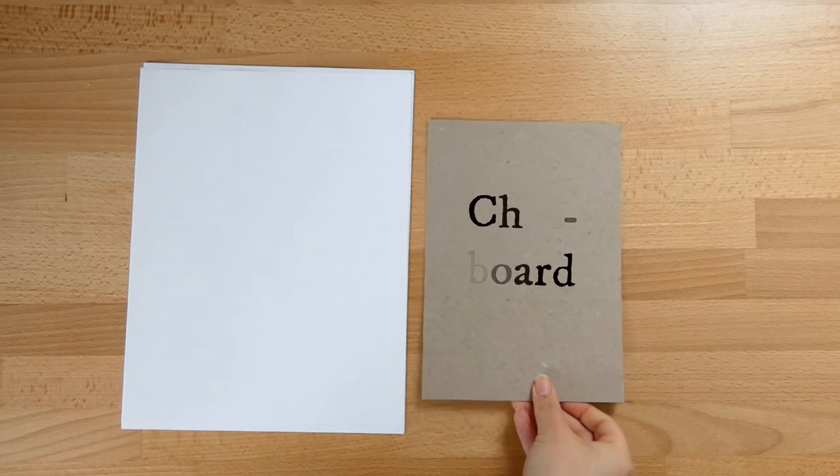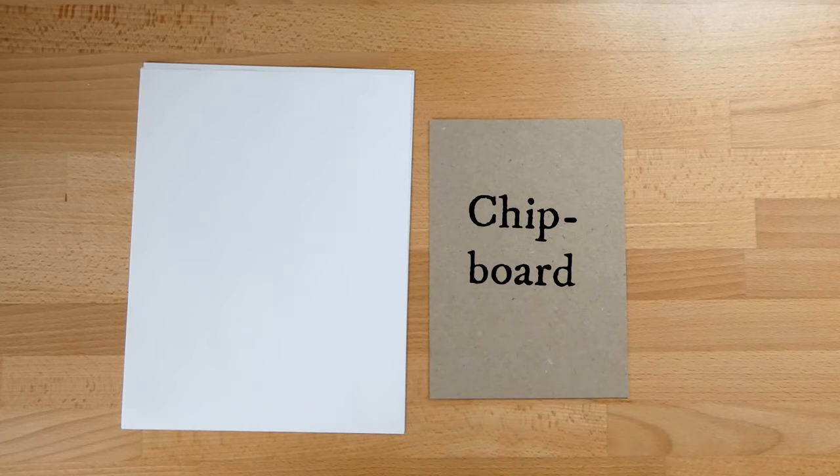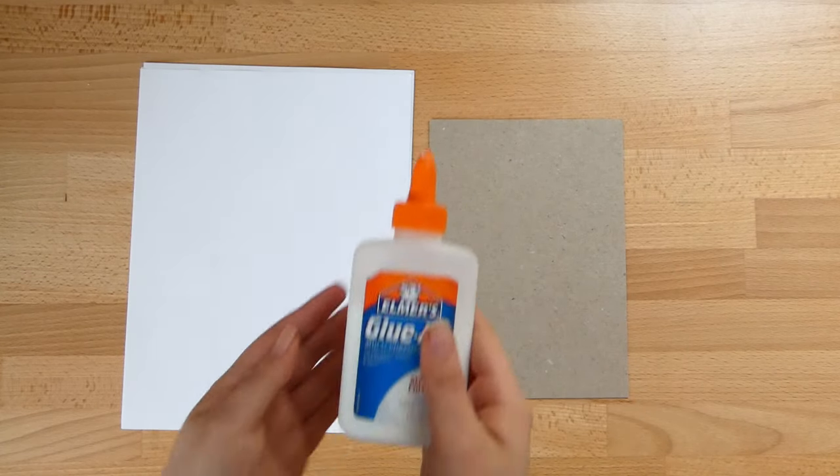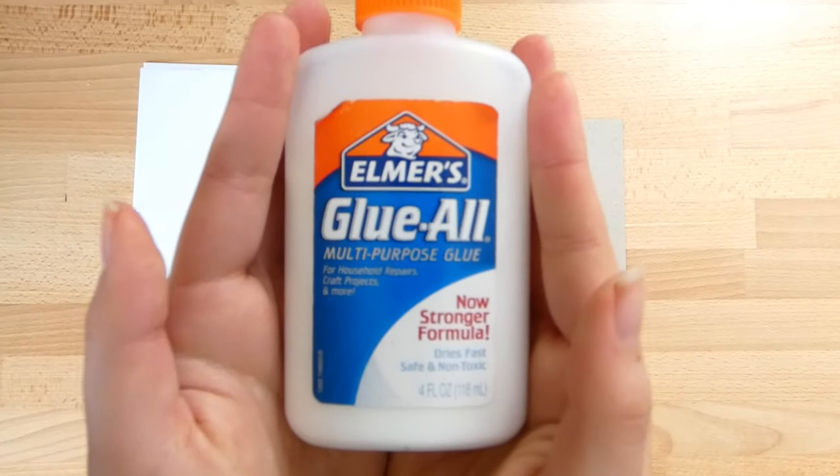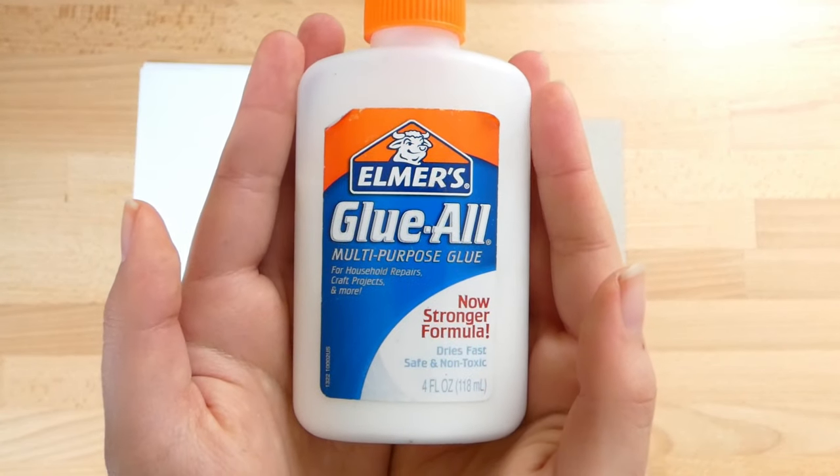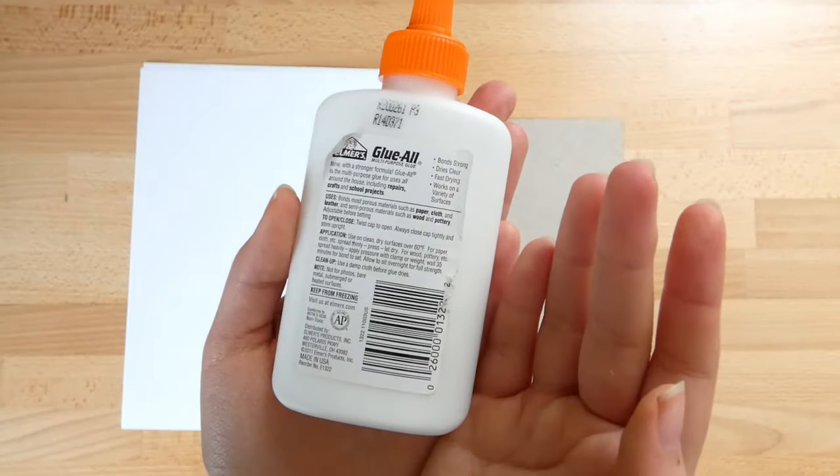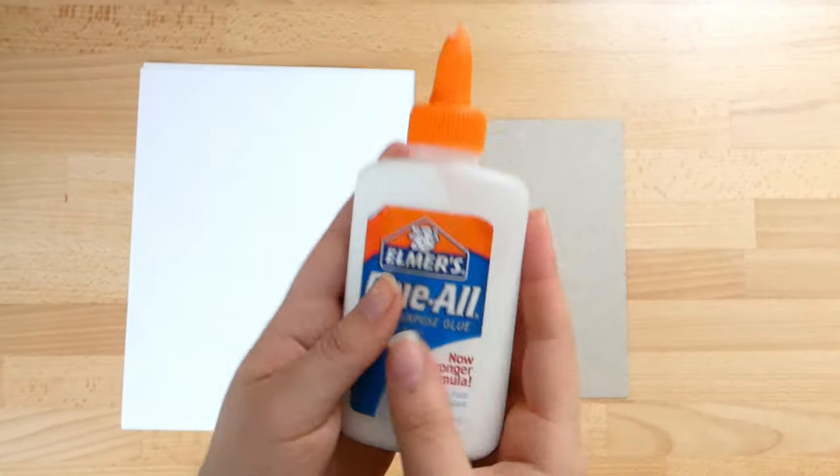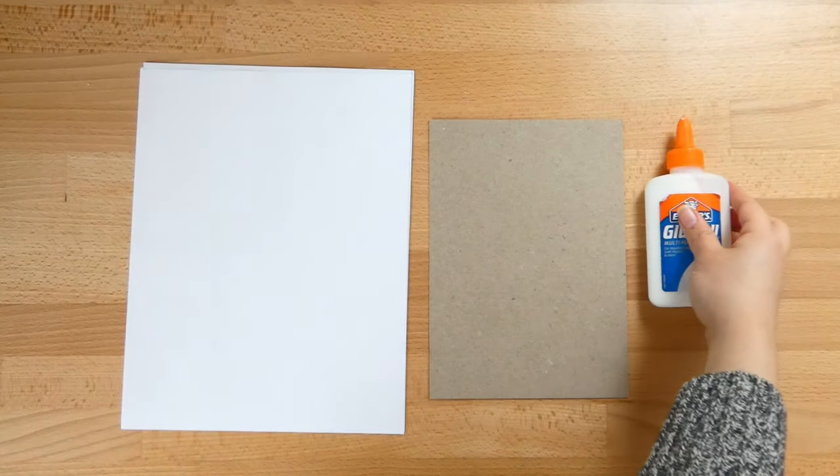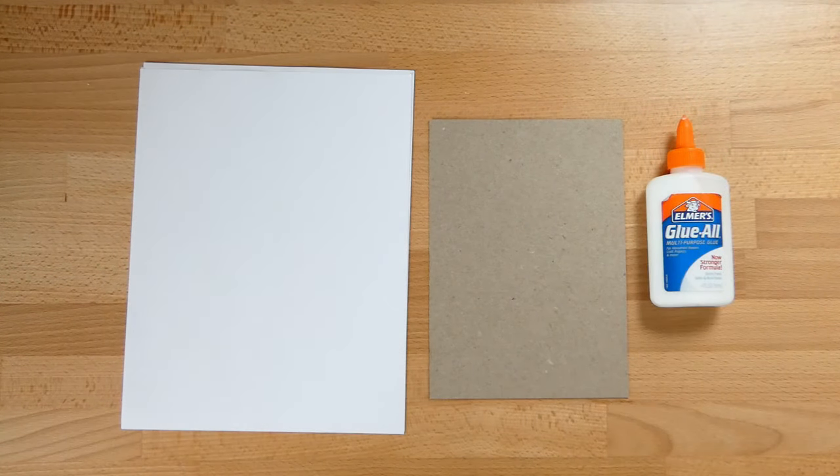Next, you'll need some chipboard. If you like, you can recycle this from an old cereal box. You'll also need some glue. You can use bookbinding PVA glue, but I find that this Elmer's glue-all multipurpose glue with the now stronger formula works fantastic and it's very easy to find and very inexpensive.